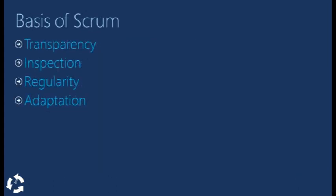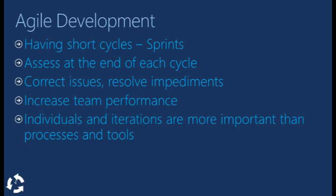The fundamentals of Scrum focus on transparency, constant inspection, regularity in tasks and events, and adaptation to the methodology. Ideally you should have short cycles that are called sprints. After each cycle the whole process is assessed and evaluated, issues are corrected and impediments are resolved. This focuses on improving and increasing the team's performance.